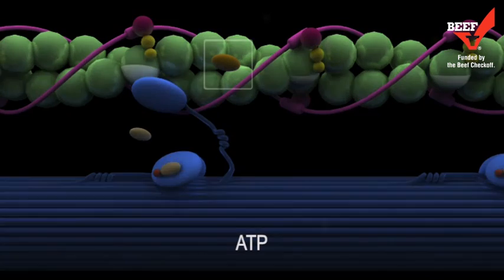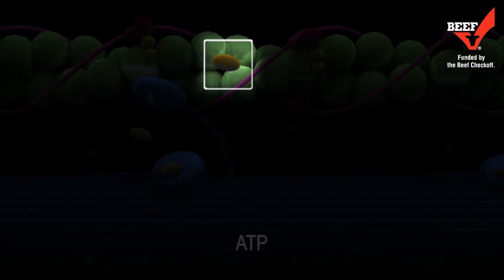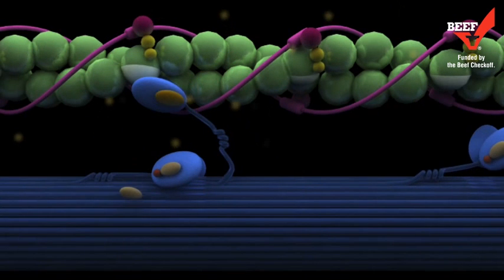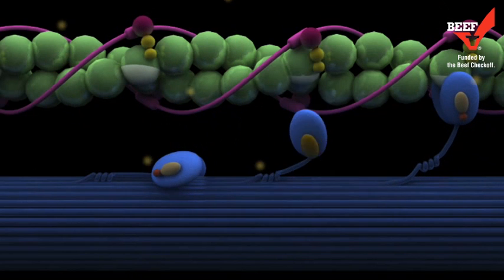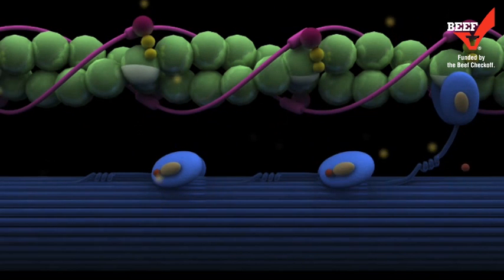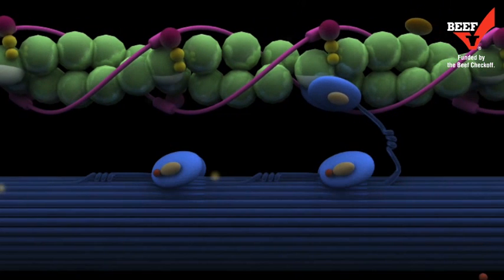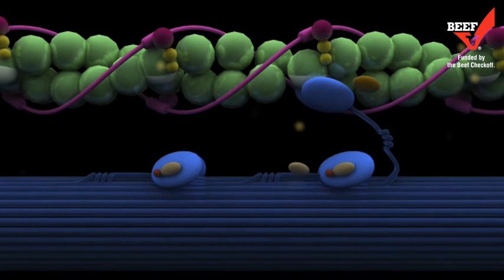ADP is released, leaving the myosin head attached to the binding site until ATP rebinds with myosin to release the head. As long as calcium ions remain at a high concentration in the muscle fiber, this sequence will be repeated until full contraction of the muscle is reached.